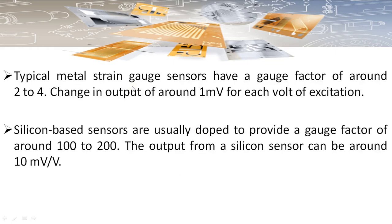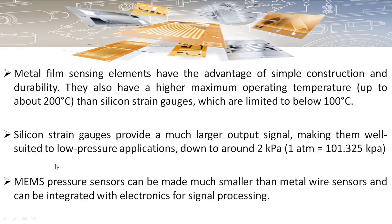The metal strain gauge sensor has a gauge factor in the order of 2 to 4, resulting in low sensitivity of about 1 mV/V. Silicon-based sensors have a gauge factor of 100–200, giving high sensitivity of about 10 mV/V. Metal film strain gauge sensors have the advantages of simple construction, high durability, and can operate at high temperatures, whereas silicon-based sensors are limited to around 100°C due to leakage current problems. Silicon strain gauges provide larger output and are well suited for low-pressure applications down to 2 kPa. MEMS pressure sensors can be made much smaller and integrated with signal conditioning electronics.